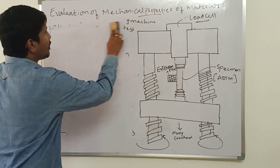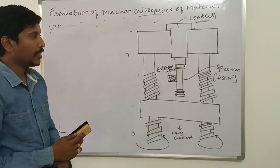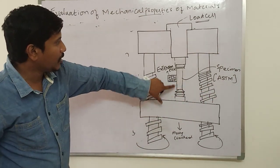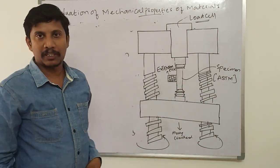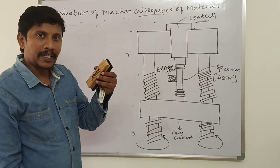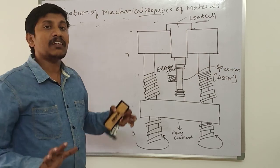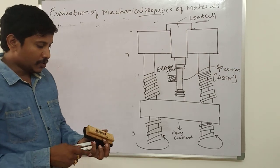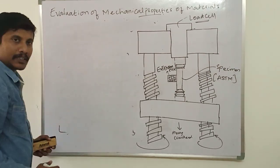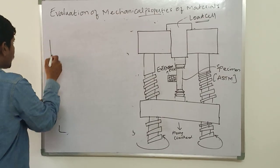As mentioned, a standard specimen prepared as per the ASTM standards is gripped between the two heads of the universal tensile testing machine and a gradually increasing load is applied until the specimen gets fractured. The standard specimen taken is as follows.